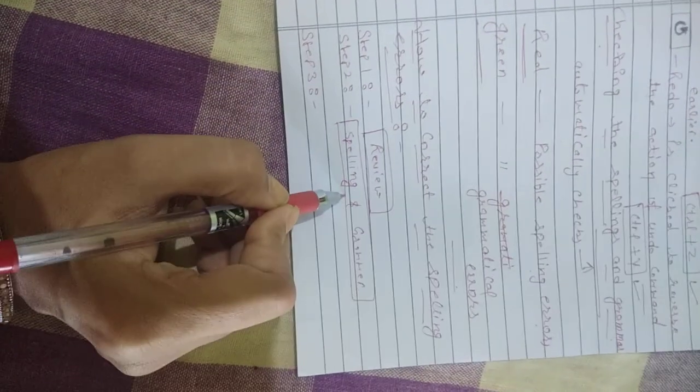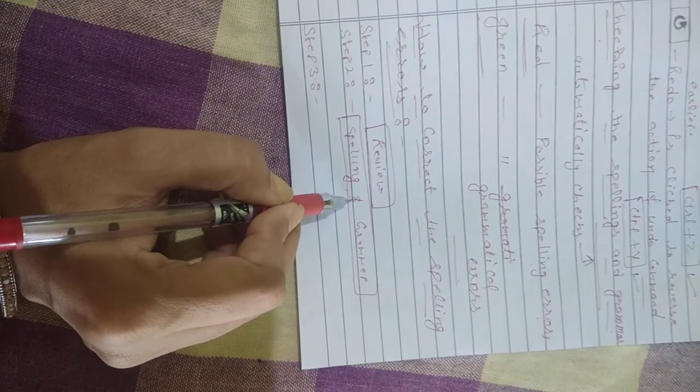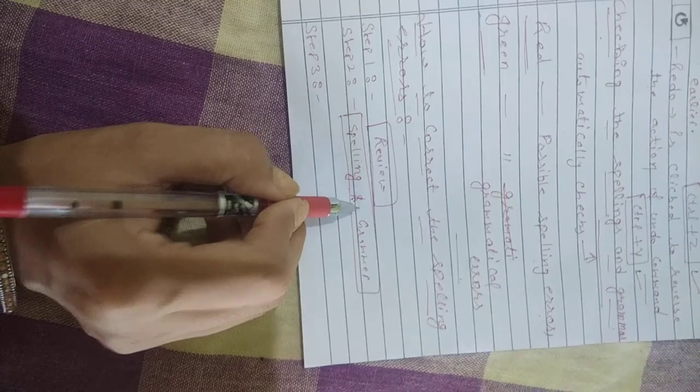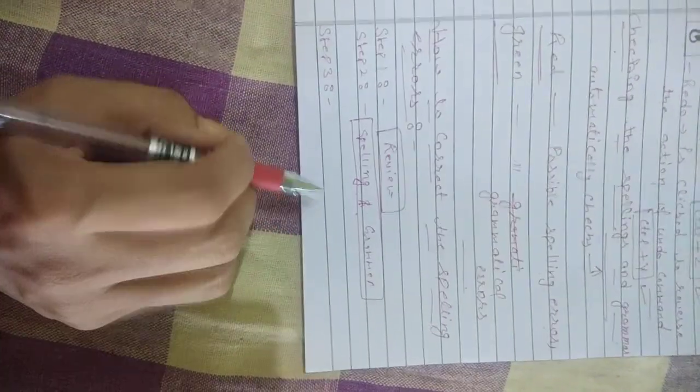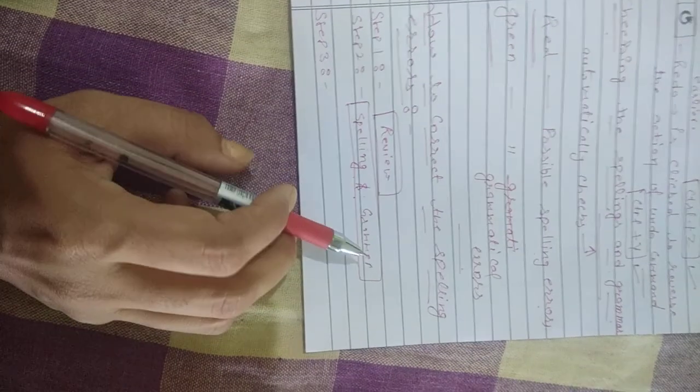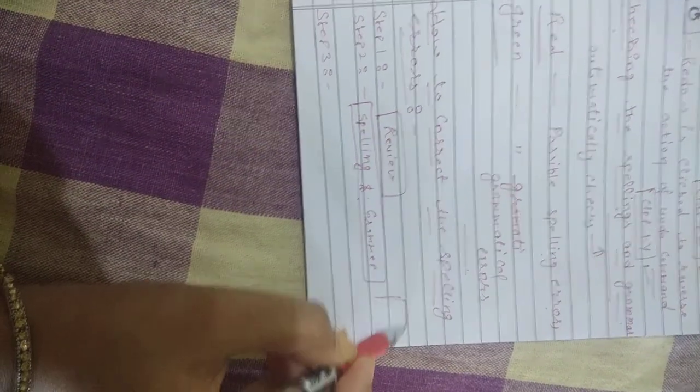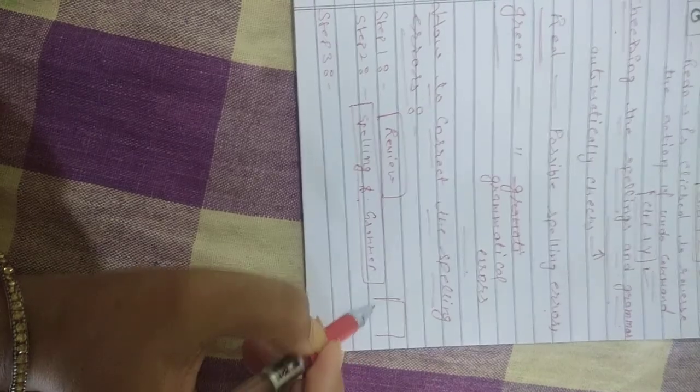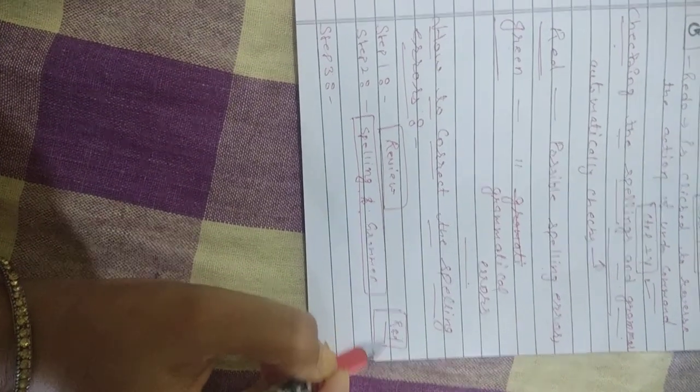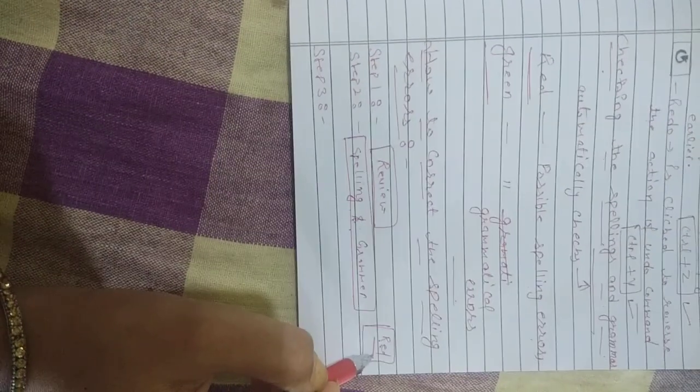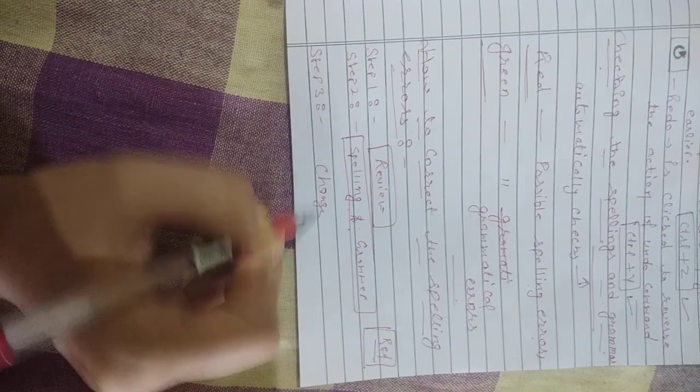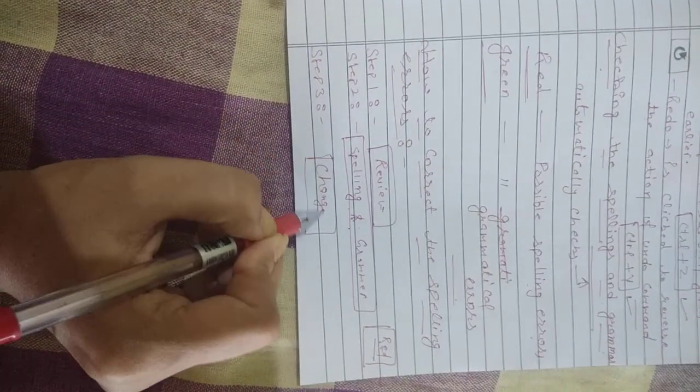When you click on this option, a dialog box appears with wrong spellings in red color and a list of suggestions. Choose the required word and click on the Change button, and your spelling will be correct.